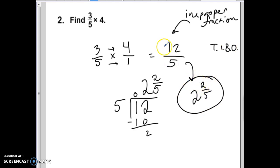Alright, in summary, rewrite the problem. Put a 1 under the whole number. Multiply across. And then simplify.